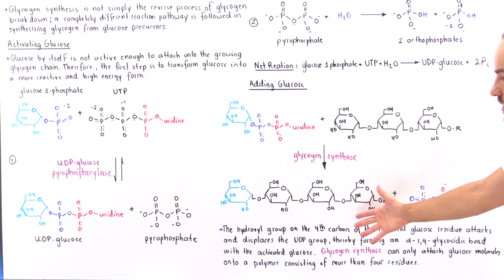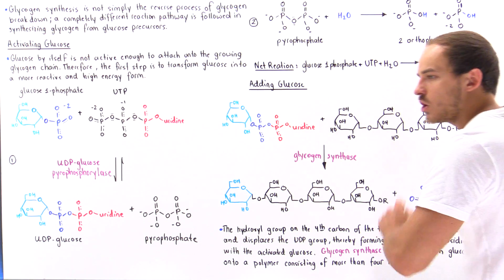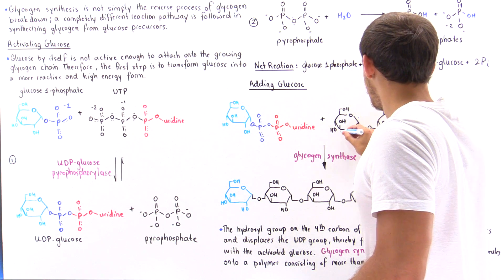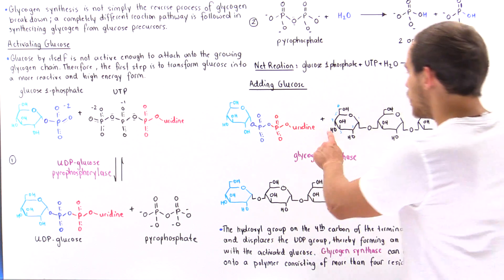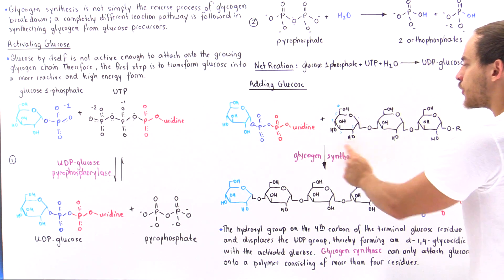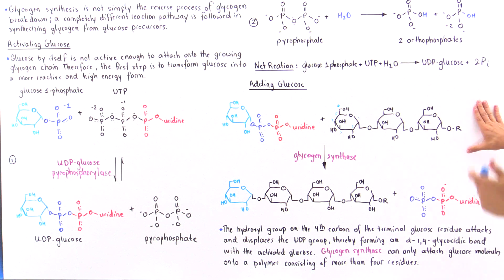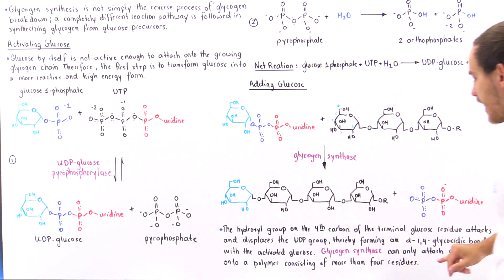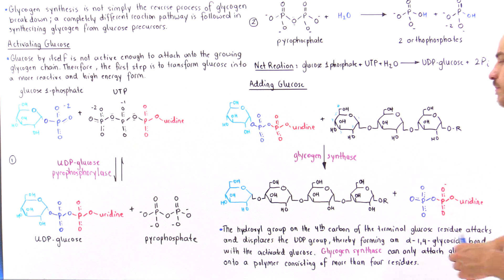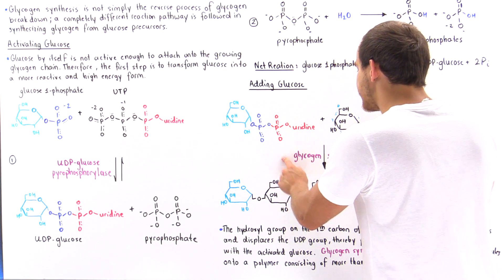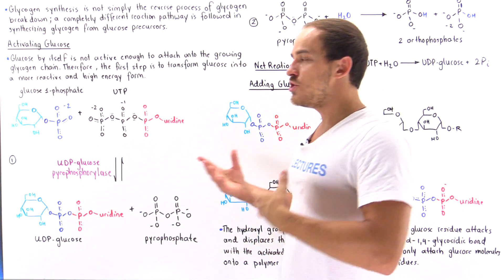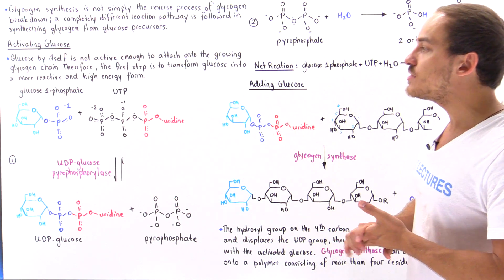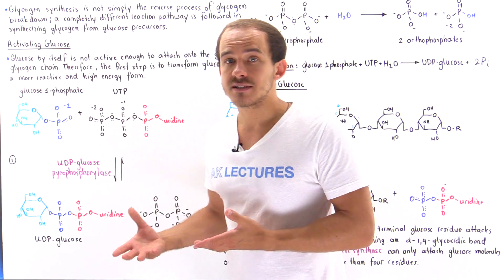To clarify with carbon labeling: carbon 1, 2, 3, 4, 5, and 6 — the hydroxyl group on carbon 4 of the terminal glucose residue of the growing polysaccharide chain attacks carbon 1 of the incoming glucose, displacing the entire UDP group and creating the alpha-1,4 glycosidic bond. Notably, glycogen synthase only creates alpha-1,4 glycosidic bonds, but glycogen also contains alpha-1,6 glycosidic bonds approximately every 10 glucose residues. How exactly do we create alpha-1,6 glycosidic bonds? That will be covered in the next lecture.